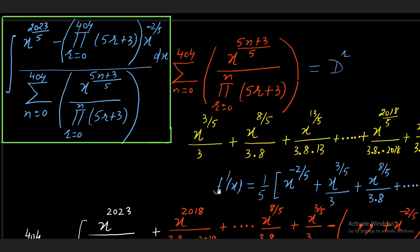Now remember the questions we did in partial fractions — if in numerator and denominator the degree is the same, then the first step is to create the denominator in the numerator. For example, for the integral of x² upon (x² + x + 1), you first create (x² + x + 1) in the numerator, then balance by subtracting something. The same concept we have to use here.